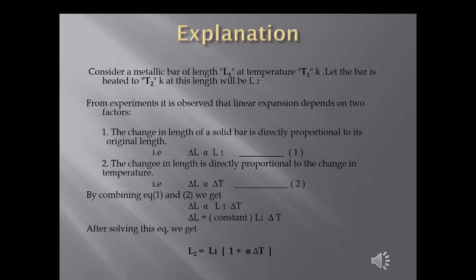Now let's look at the mathematical definition of linear expansion — how the size of an object increases and what factors it depends on. Consider a metallic bar with initial length L1 at temperature T1. After heating, its new length will be L2 at temperature T2. We observe that linear expansion depends on two factors.